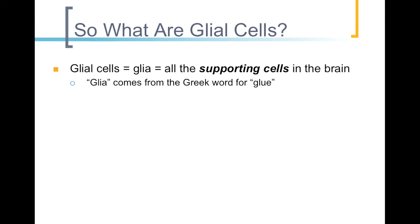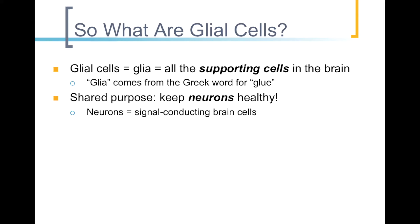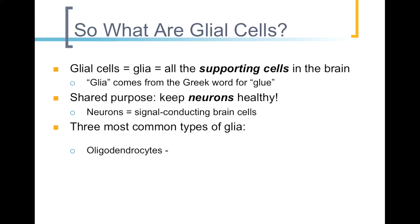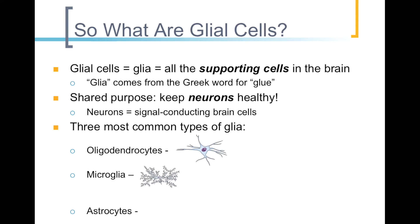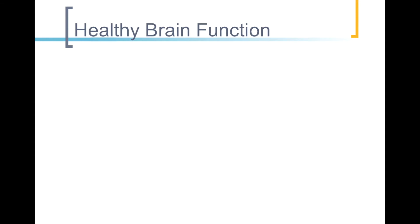They share a common goal: to keep the neurons, or signal conducting brain cells, in proper health. We'll discuss the three most common types of glial cells — oligodendrocytes, microglia, and astrocytes — and what happens to them when the brain is injured.